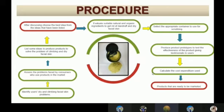Four, after discussing, choose the best idea from the ideas that have been tested. Five, evaluate suitable natural and organic ingredients to get rid of dandruff and dry facial skin. Six, select the appropriate container to use for scrubbing. Seven, produce product prototype to test the effectiveness of the product and give testimony to users. Eight, calculate the cost expenditure used. And lastly, the product is ready to be marketed. Thank you.